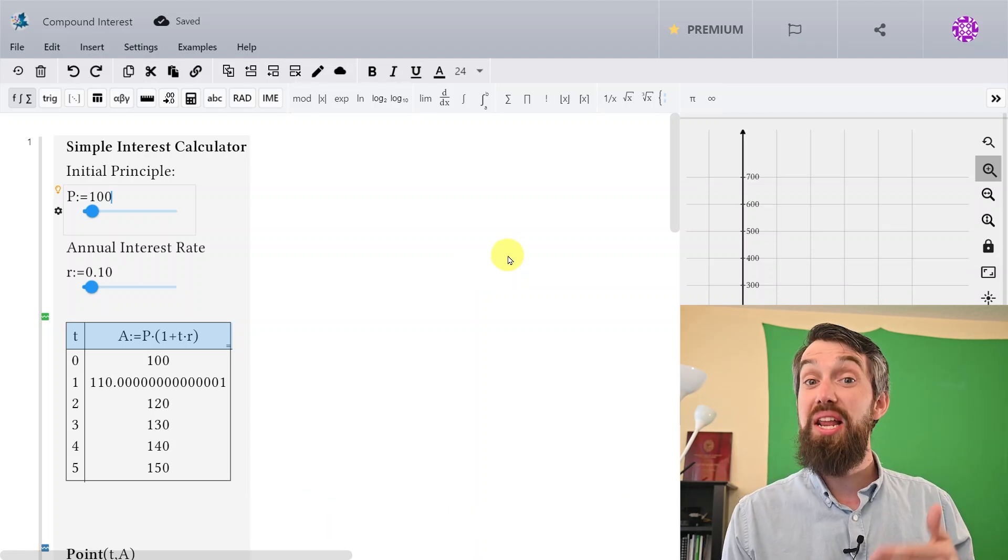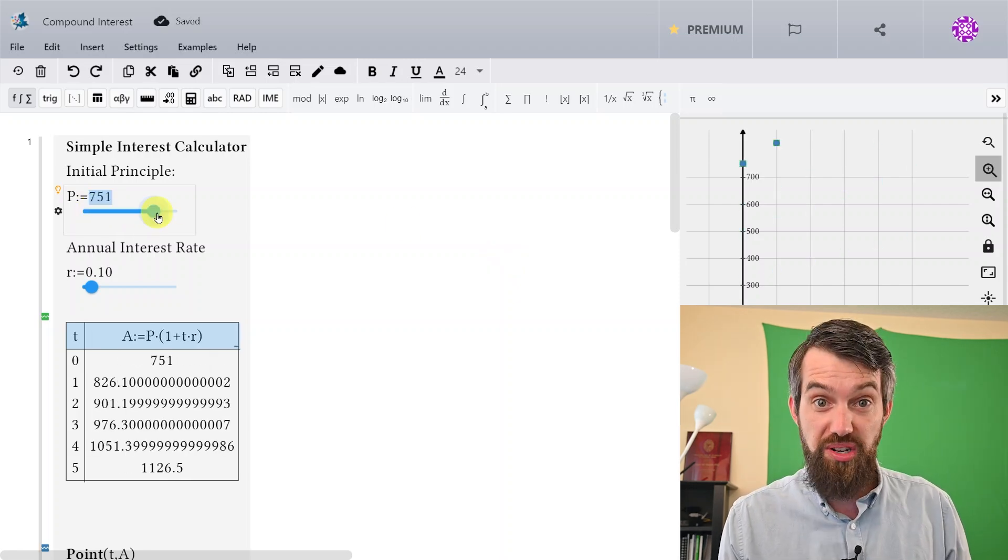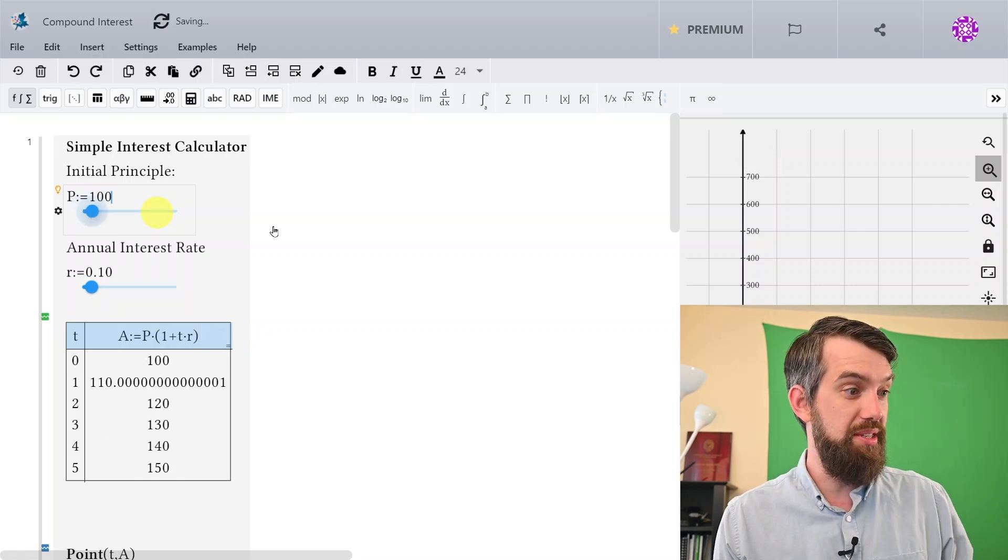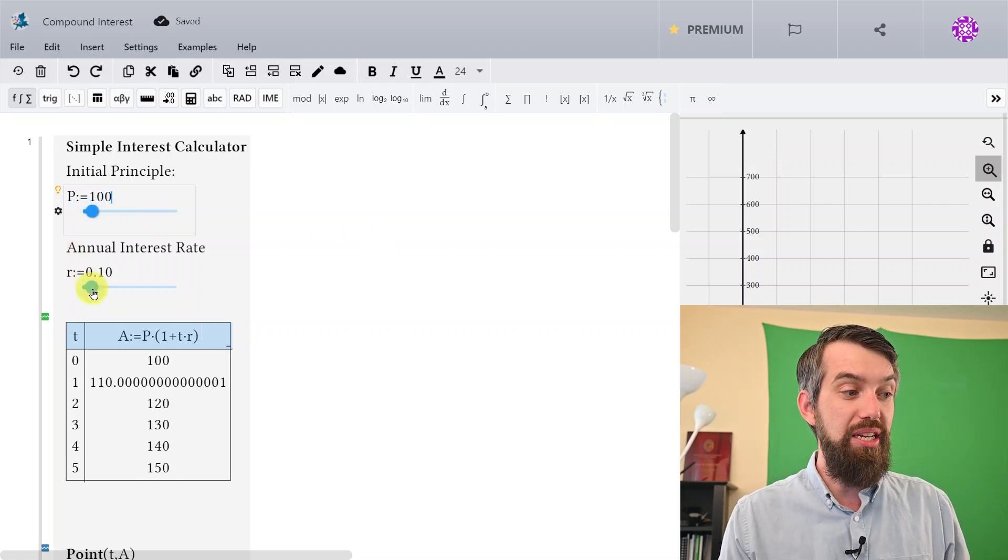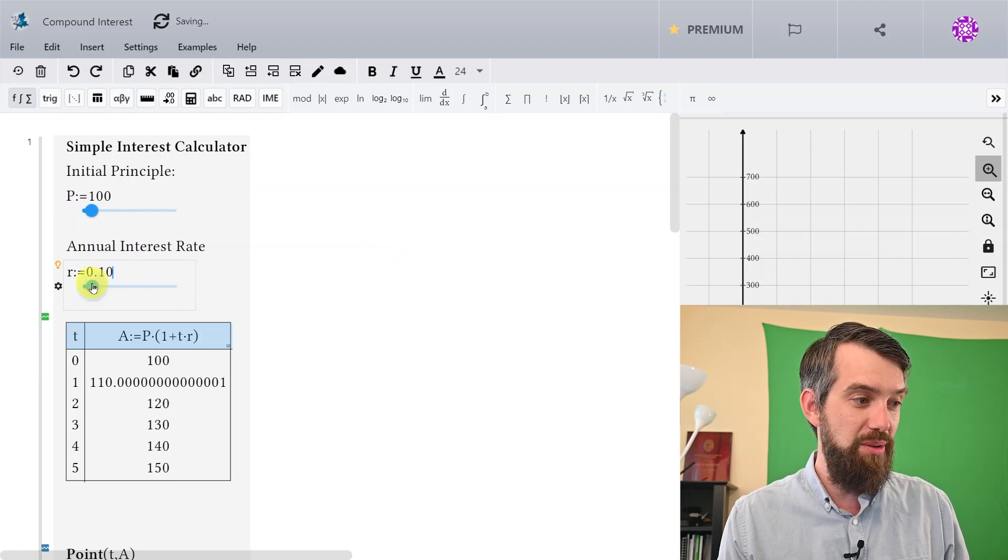Now what I've done here is I've made a couple different sliders. So first of all, you can set your initial principal to be whatever you like. For example, the 100 that we started with sounds good. You can similarly slide your interest rate to be whatever you like. I'm going to set it back to be equal just to 10.